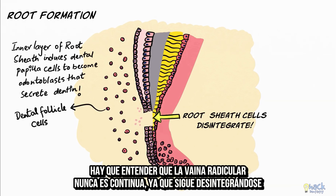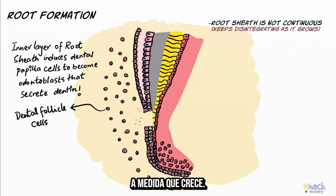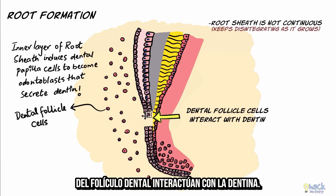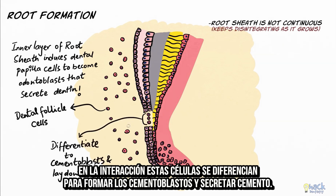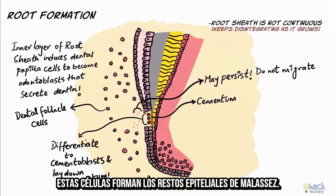The root sheath is never continuous as it keeps disintegrating as it grows. Most of the disintegrated cells move away from the root surface and the cells from the dental follicle interact with the dentine. On interaction, the cells from the dental follicle differentiate to form cementoblasts and lay down cementum. However, some of the disintegrated cells of the root sheath do not migrate and may persist in the root area — these cells form the epithelial rests of Malassez.